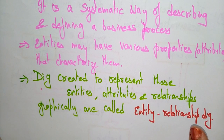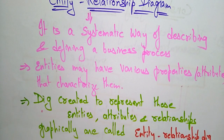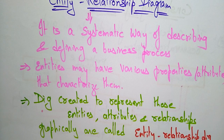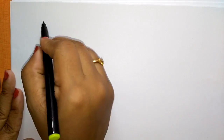The main use of the Entity Relationship Diagram is that it is a systematic way of describing and defining the business process. So what exactly is an entity?